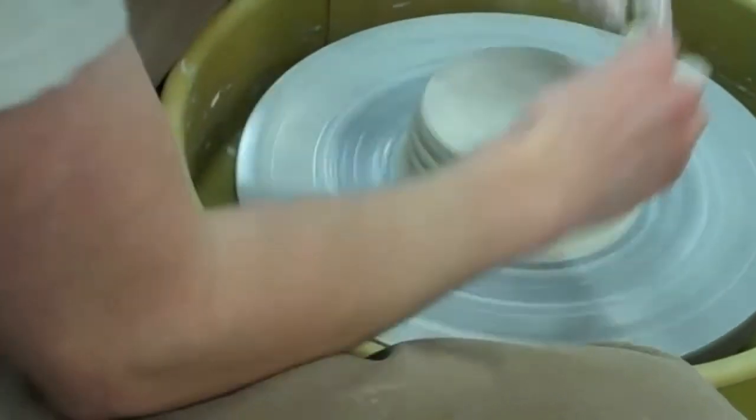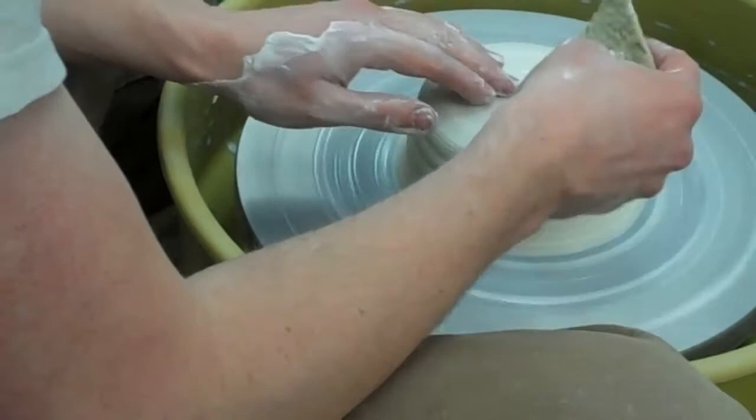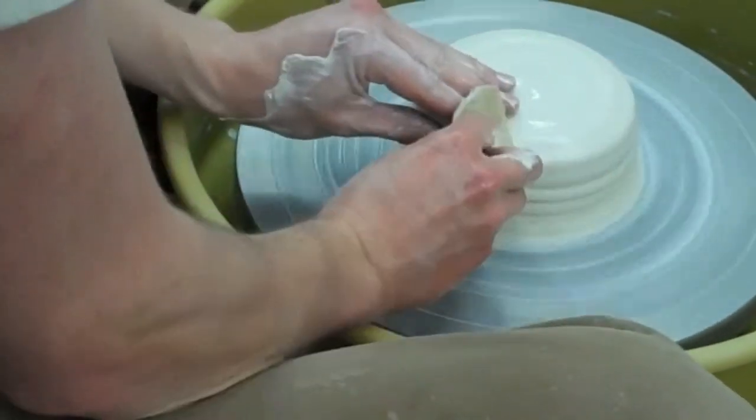So we have a centered hockey puck. Now we want to open this up. We want to create some volume on the inside. With this I'm going to throw just a basic cylinder.